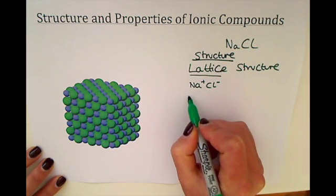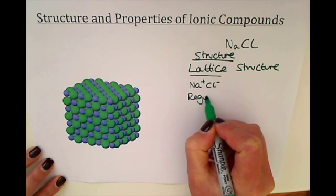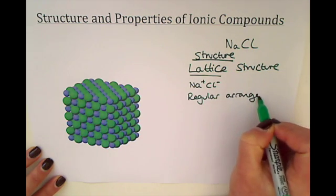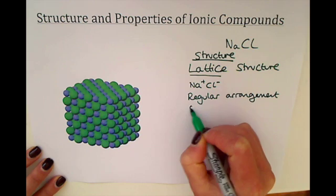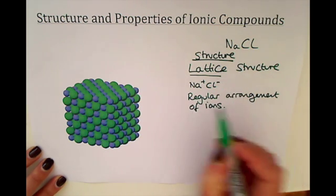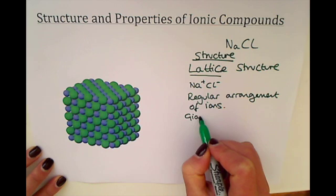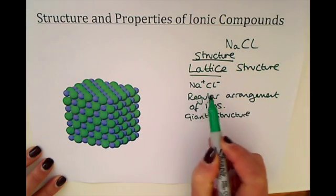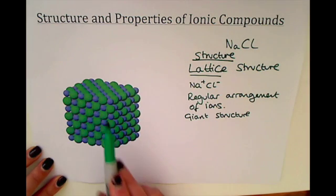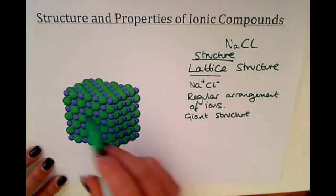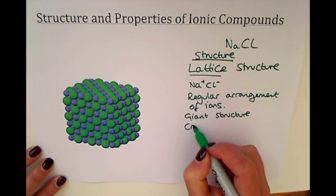So if we were to define the structure itself, we'd say it's a lattice structure with a regular arrangement of ions. That is why it's a lattice — it's a giant structure, because you don't just have one or two atoms bonding together; you would have millions of atoms bonding together in these lattices. And this also makes it a crystalline structure.